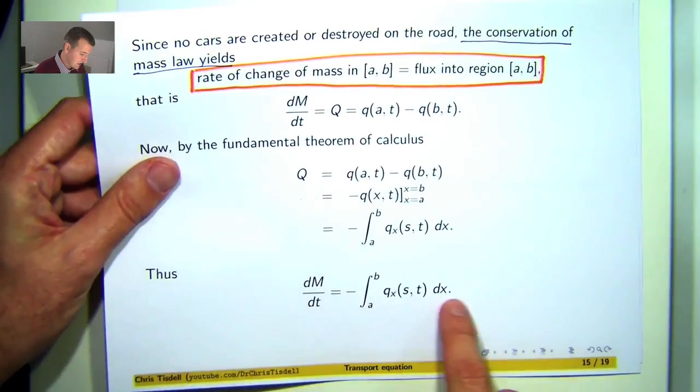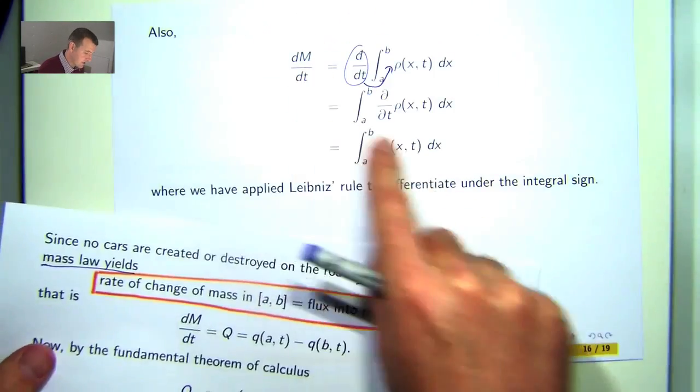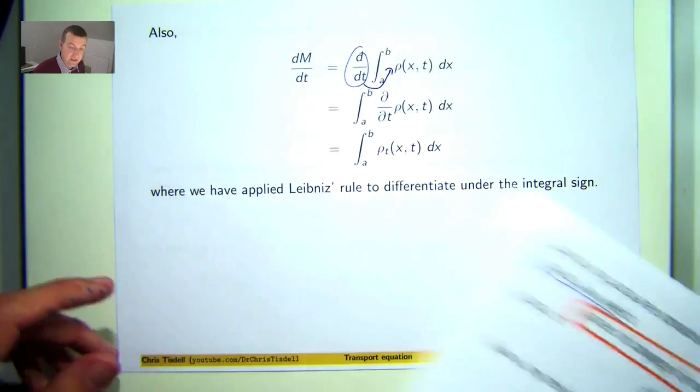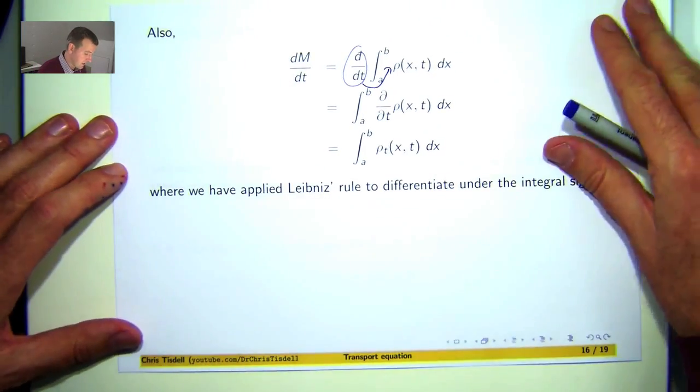So I have an expression here for dm dt. I have an expression here for dm dt. And what I can do now is just set them to be equal.